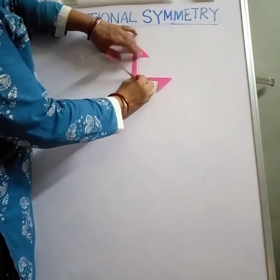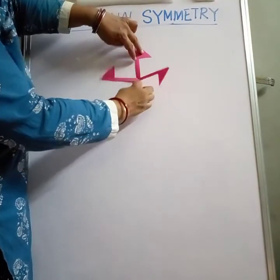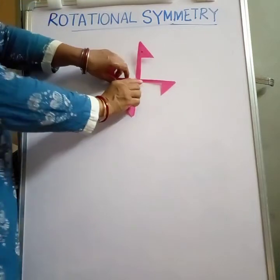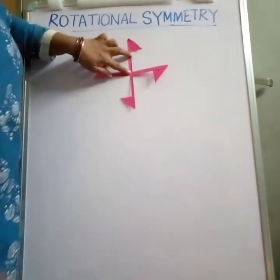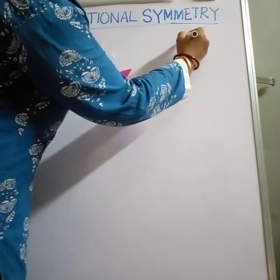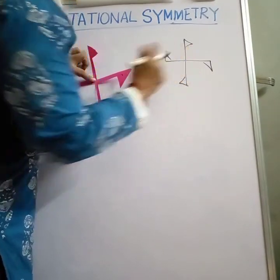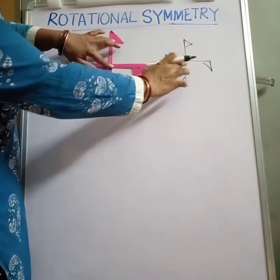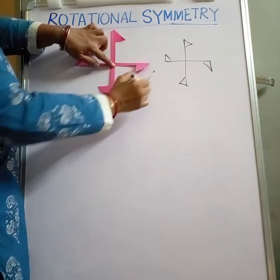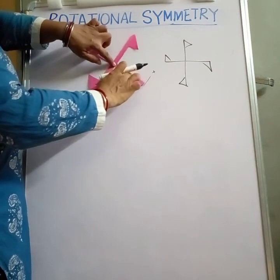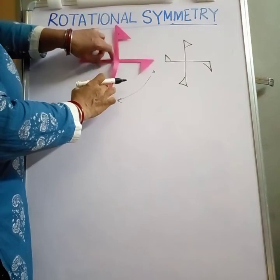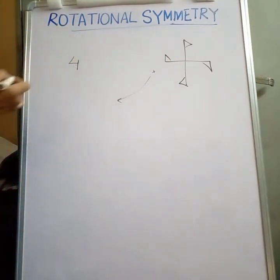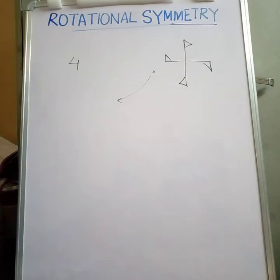This figure, if we try to fold it in any way, the arrows come on the opposite side, so it has no line of symmetry. But if we rotate it, it shows the same original position four times during one complete rotation. So it has no line of symmetry but has rotational symmetry of order 4.